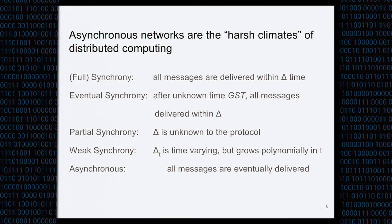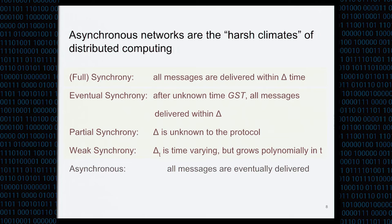There is a spectrum of timing assumptions in distributed computing. The strongest assumption is full synchrony, where every message between uncorrupted nodes is delivered within a fixed time delta. There are weaker assumptions — cases where the bound exists but you don't know it, or it may not hold at all times — and these are all essentially equivalent because there are generic transformations between them. The weakest assumption is full asynchrony, which says all messages between uncorrupted parties will be delivered, but with no guarantee about how long it could take. This is clearly the most difficult setting, and the honey badger of BFT protocols should work even here.